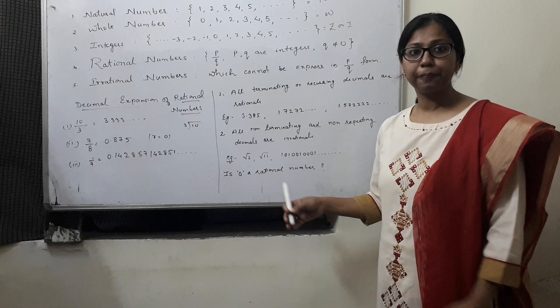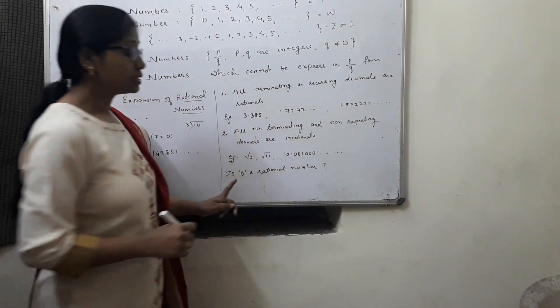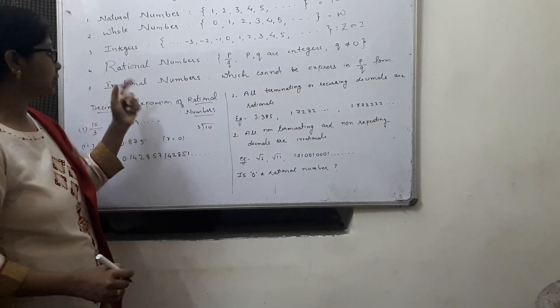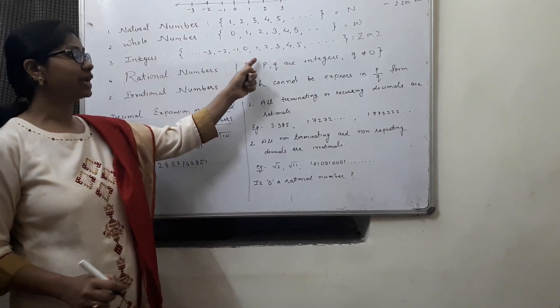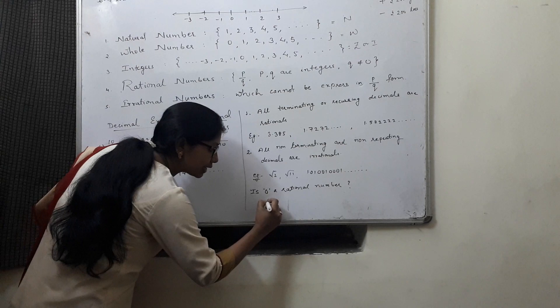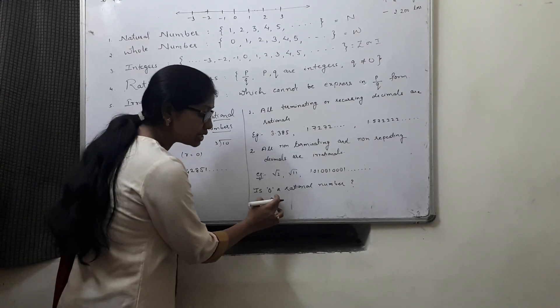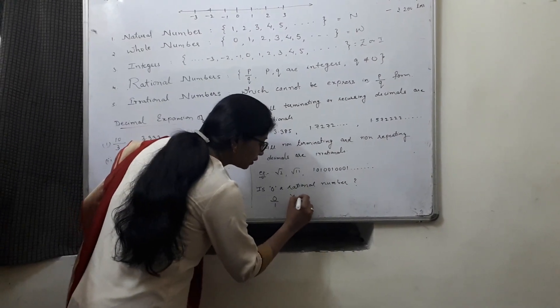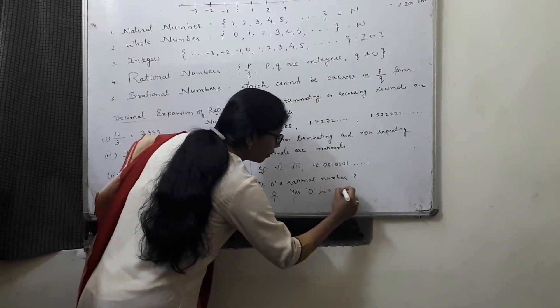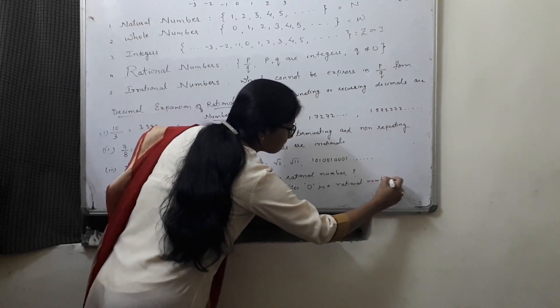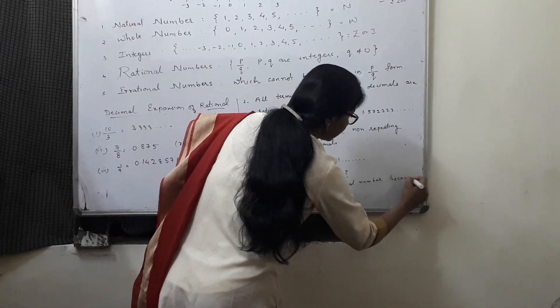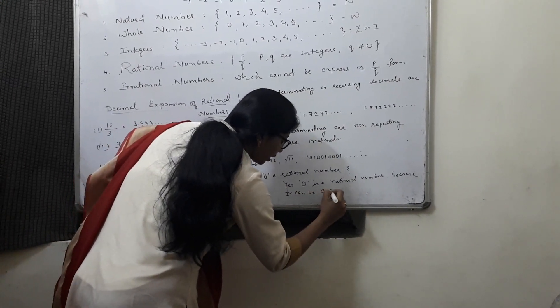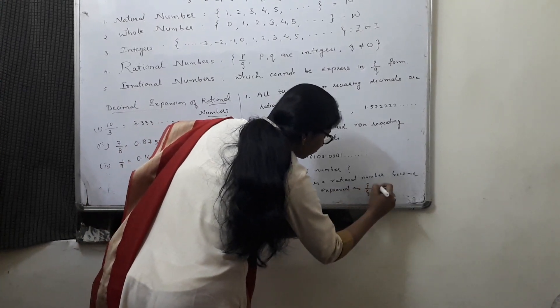Now, the question is, is 0 a rational number? Yes. 0 is a rational number. Because 0 can be, let us check its definition. Rational numbers are the numbers which we can express in P by Q form. So, 0 we can express in 0 by 1. Where 0 is an integer and 1 is also an integer and denominator is not 0. Yes, 0 is a rational number because it can be expressed as P by Q form.